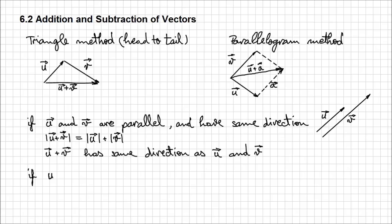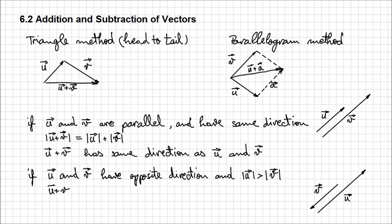However, if you have the two vectors u and v that have opposite directions and the magnitude of u is greater than magnitude of v, like in this diagram, they are parallel, but they are pointing in opposite directions, and u is greater than v, then the magnitude of this resultant vector u plus v is going to be the magnitude of u, the bigger vector, minus the magnitude of v. And the direction of this resultant vector u plus v is going to be having the same direction as u, the longer, the bigger vector.